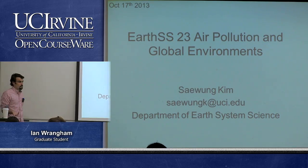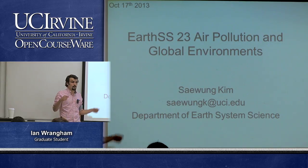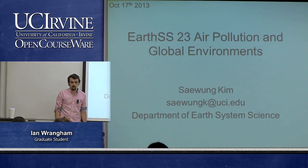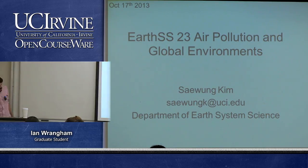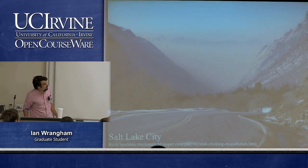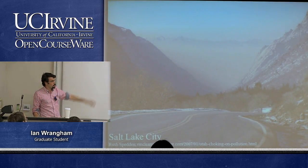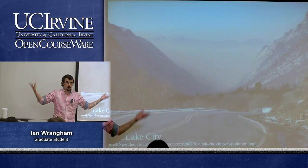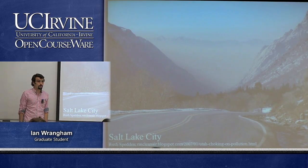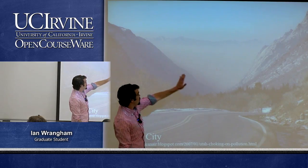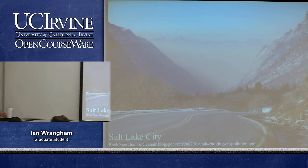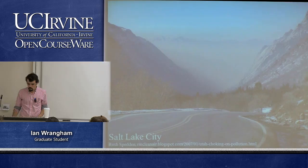Particulate matter can be liquid or solid, and in aerosol form it's suspended in air. When you have a lot of particulate matter, it influences visibility a lot. Here's a photo of Salt Lake City — you can't see the city at all. This is stagnant winter air that hasn't flushed out the particulate matter accumulating from fossil fuel burning over time.